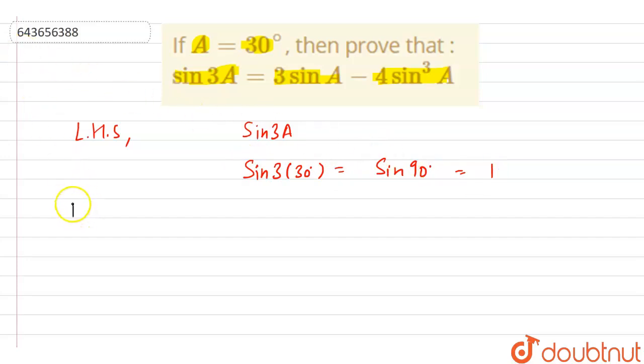Now let's solve our RHS. Here at RHS, it is given as 3 sin A minus 4 sin³A. Now let's put the values of A here as we are having.